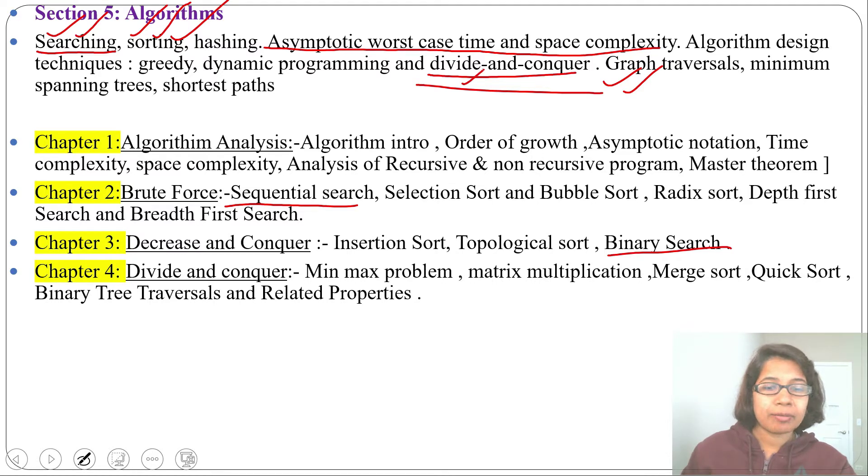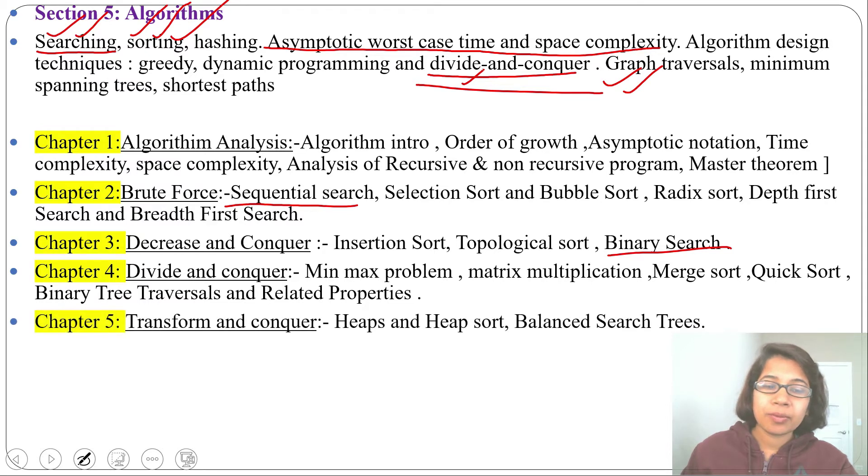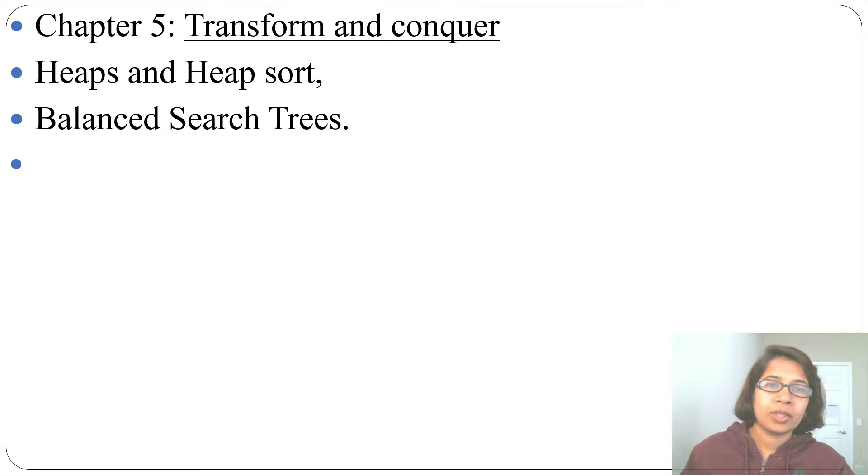Next I will discuss Chapter 5, Transform and Conquer Technique. There I will discuss Heap and Heap Sort, Balanced Search Tree. Heap Sort comes under Sorting. And in Balanced Search Tree I will just discuss the Algorithm part not Data Structure part. In Chapter 5 Transform and Conquer I will discuss Heap and Heap Sort, next Balanced Search Tree.